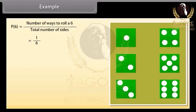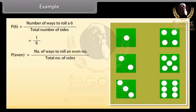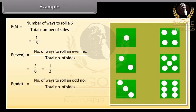Now we can see that the way to roll even numbers is 3. We can find the probability as P(even) equals number of ways to roll an even number upon total number of sides, which equals 3 upon 6, which is 1 upon 2. And way to roll odd number is 2. So the probability is P(odd) equals number of ways to roll an odd number upon total number of sides, which equals 3 upon 6, which is 1 upon 2.